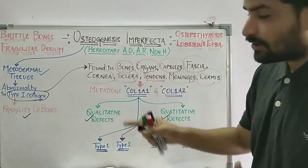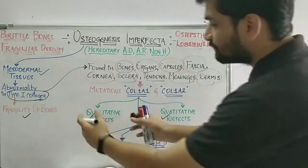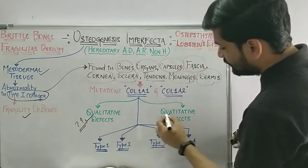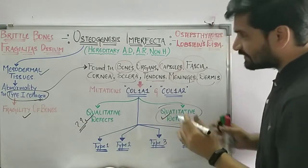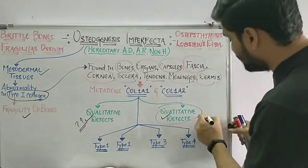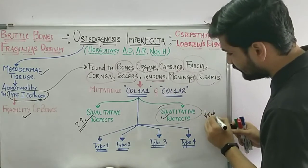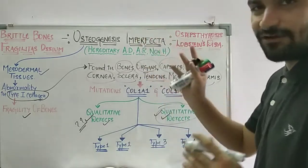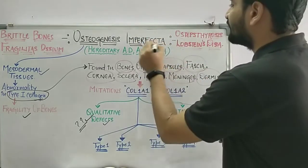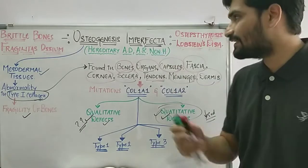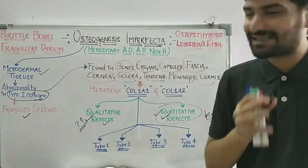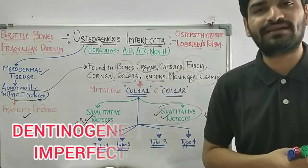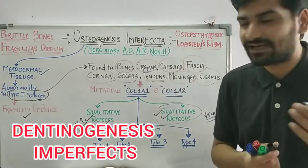The qualitative defect relates to the quality of bone formation, which will be degraded. The quantitative defect means the quantity of bone formation will be reduced. So both qualitative and quantitative defects are seen in osteogenesis imperfecta. There is also a superficial relation between osteogenesis imperfecta and dentinogenesis imperfecta, which has already been discussed.